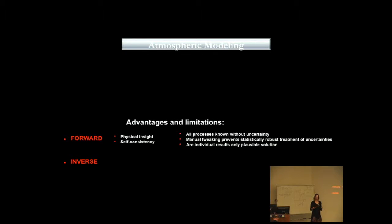Both of those approaches have their limitations and advantages. The advantages of forward model is that they give us a physical insight into the planetary atmosphere because we engage all the physical and chemical knowledge that we have. It is also usually called self-consistent.